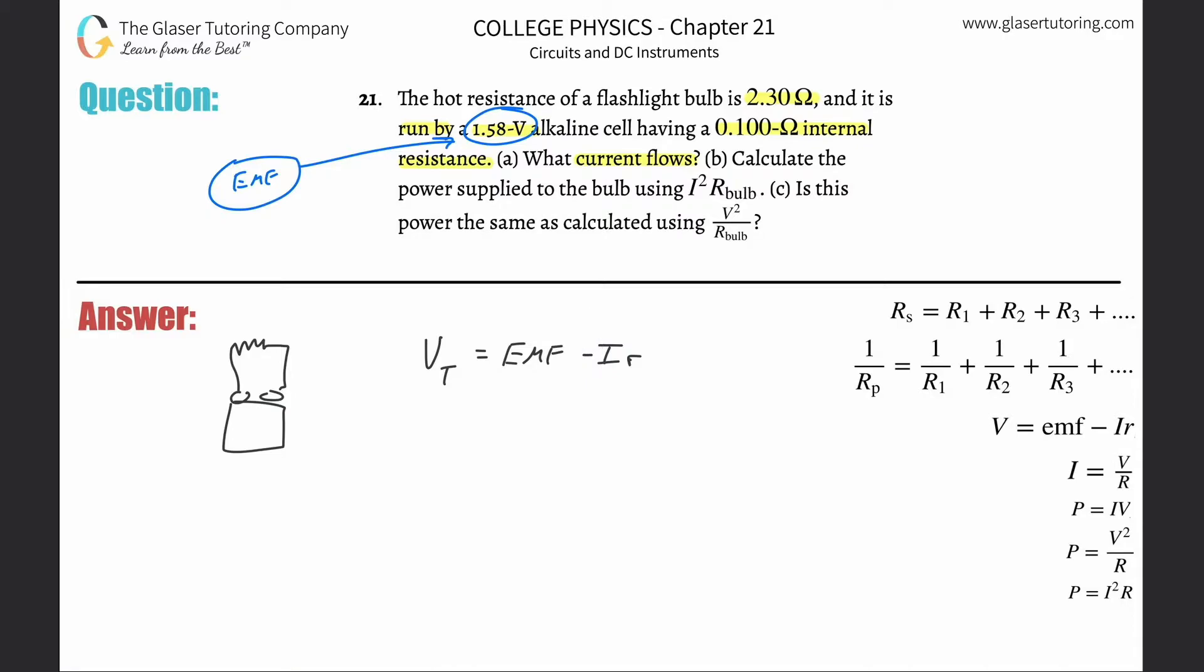Now, we know the EMF. That's 1.58. Great. We don't know the current. No big deal. Leave it I. And the R, we know the internal resistance is 0.1. VT. Now, what about this terminal voltage?